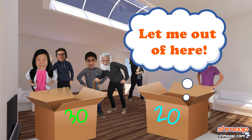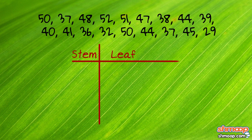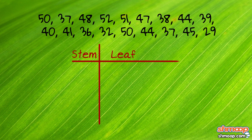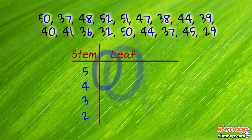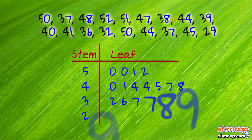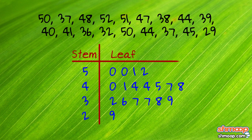So to make a stem and leaf plot, create the stem by listing the digits with the largest place value to the left of a vertical line. In this case, we have the 10s place: 5 for 50, 4 for 40, 3 for 30, and 2 for 20. The remaining digits — those in the 1s place — will be written to the right of the vertical line to create and organize the leaves.